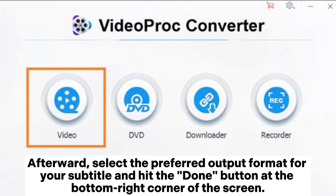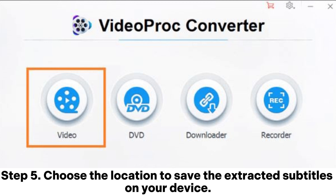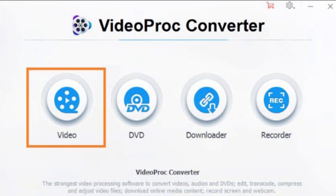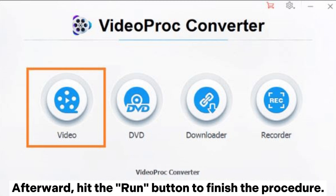Step 4: choose the Export Subtitle option by scrolling through using the arrow icon. Afterward, select the preferred output format for your subtitle and hit the Done button at the bottom right corner of the screen. Step 5: choose the location to save the extracted subtitles on your device by hitting the Browse button and selecting the destination folder from the dialog box. Afterward, hit the Run button to finish the process.